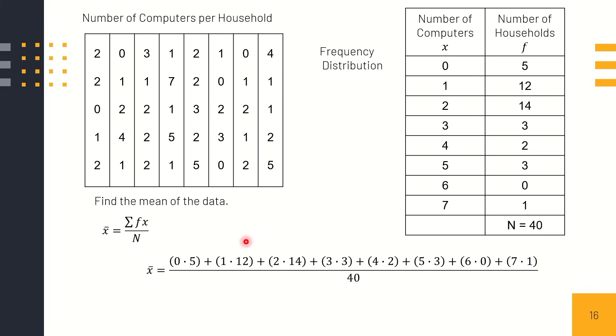You can use weighted mean. Multiply x times f: 0 times 5 plus 1 times 12 plus 2 times 14, multiply these and then add, divided by 40 because we have 40 households. After that, we get 79 divided by 40, so the answer is 1.975 or approximately 2. We can't say 1.975 computers because we count computers as whole numbers. When there's a decimal, that would be just parts of a computer. Therefore, the mean number of computers per household is 2.